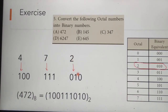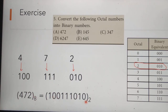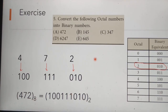Next our third digit is 2; its binary equivalent is 010, that is also written here. Finally we write all the binary digits together to the base 2. This is our final binary number for the octal number 472 to the base 8. Like that you can convert the remaining octal numbers also into their equivalent binary numbers.